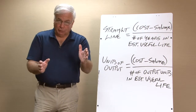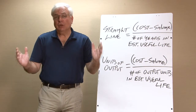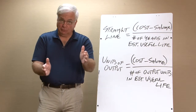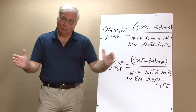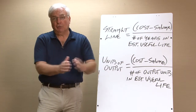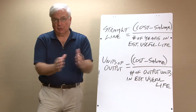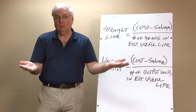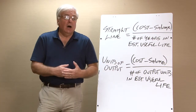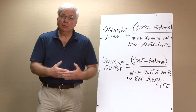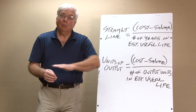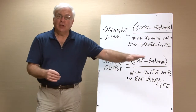Two things to be careful of with straight-line: the initial year may not be twelve months long. If we started using the asset on July 1st, we'd only have six months in the first year, and we may need to prorate the final year too. All intervening years will be twelve months. Straight-line is very easy and lends itself well to assets used in a linear pattern — a parking lot, fence, building, tables and chairs — where wear doesn't differ much from year to year.